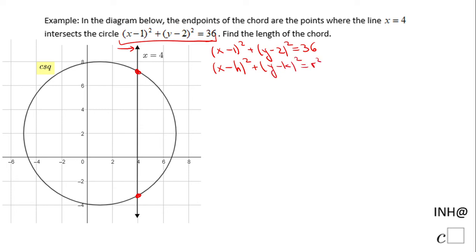We'll identify these parts: h will be 1—don't forget to look for the minus sign. Also, k will be 2—again, check for the minus in your equation. The radius squared is 36, which gives a radius of 6.